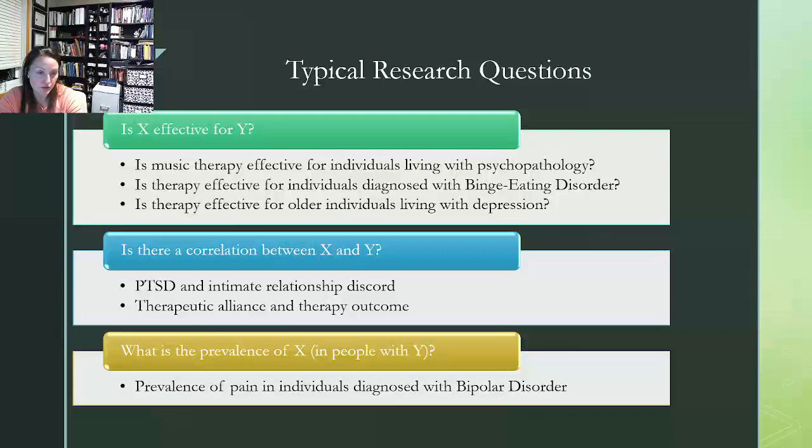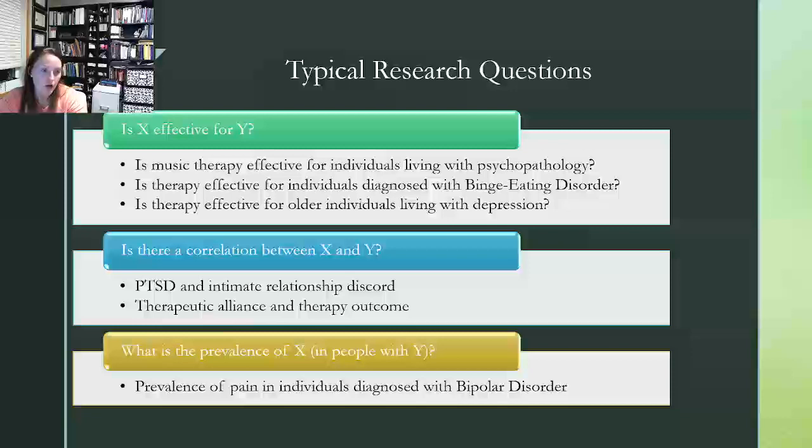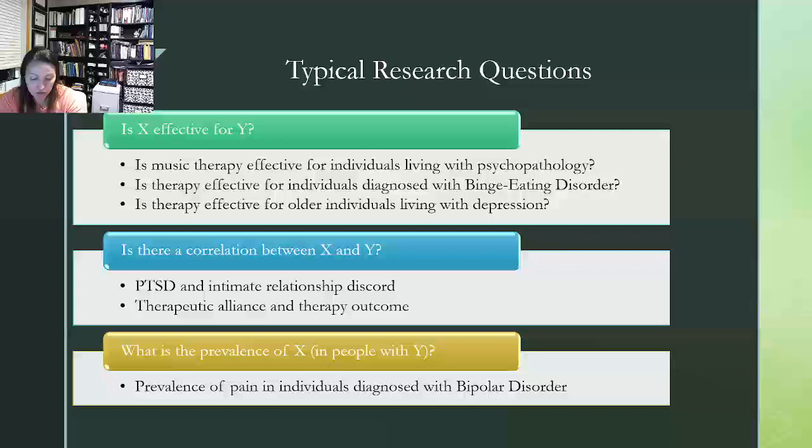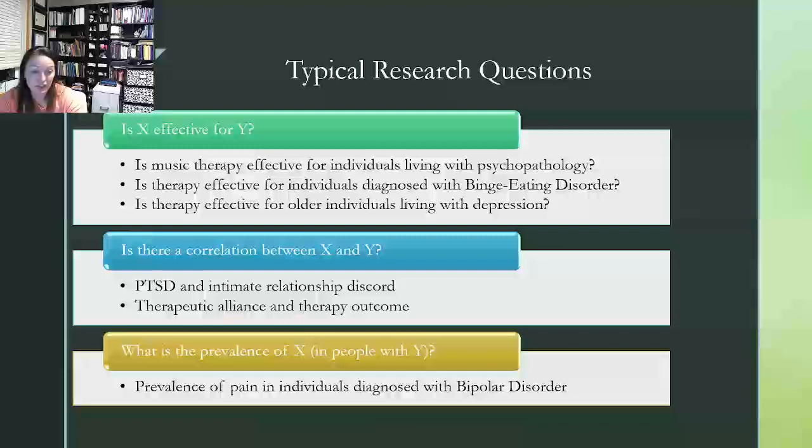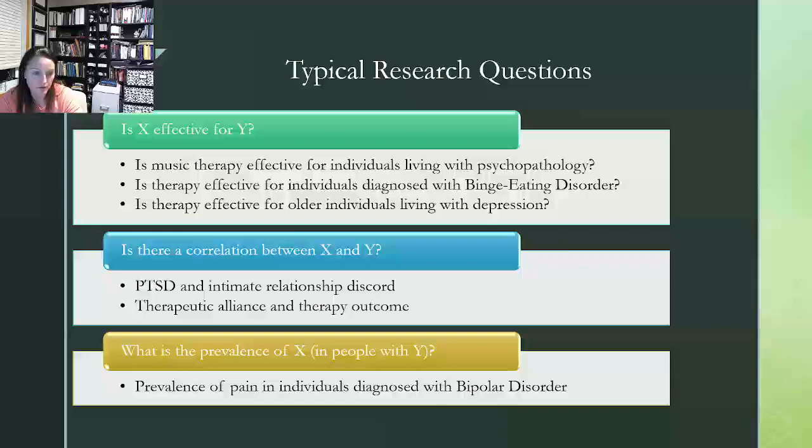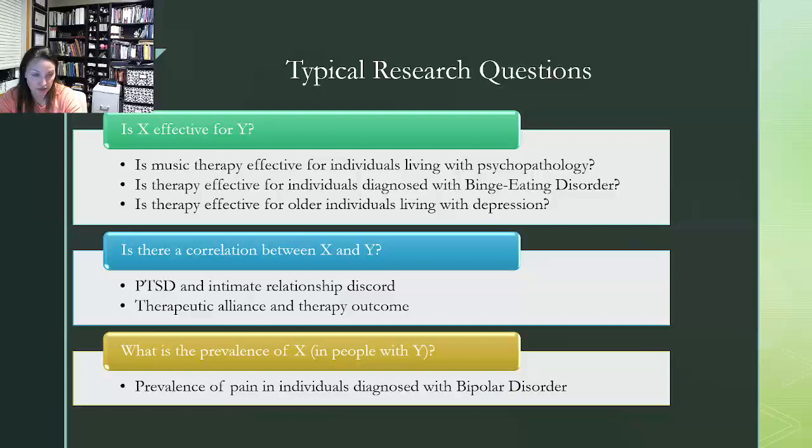Another viable research question is looking at a relationship between two variables. So is there a correlation between X and Y? So let's say we wanted to determine if there was any sort of relationship between PTSD and intimate relationship discord. We would be able to look at that, assuming that there's literature in that area, and there is. What if we also wanted to examine whether or not therapeutic alliance had a relationship with therapy outcome? So we would be looking at, are these two things in any way related to one another? And what does that look like in more detail?